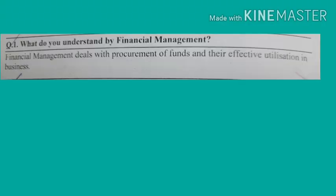So first, what do you understand by financial management? Financial management deals with procurement of funds and their effective utilization in business. The first aspect is procurement of funds. Procurement of funds means funds can be obtained from different sources, e.g., equity, preference capital, debentures. Funds procured from different sources have different characteristics in terms of risk, cost, and control.